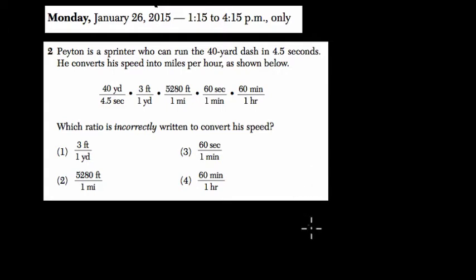Okay, let's start by taking a look at this problem together. Let's see what they're asking. They say that Peyton is a sprinter who can run the 40-yard dash in 4.5 seconds. He converts his speed into miles per hour. So that's our goal - we're trying to convert into miles per hour. And he's using this technique right here.